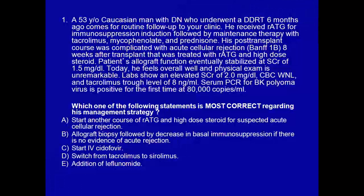The question is which one is most correct regarding management: Start another course of ATG and high-dose steroids for suspected acute rejection; allograft biopsy followed by decrease in immunosuppression if there is no evidence of acute rejection; start IV cidofovir; or switch from tacrolimus to sirolimus or addition of leflunomide.